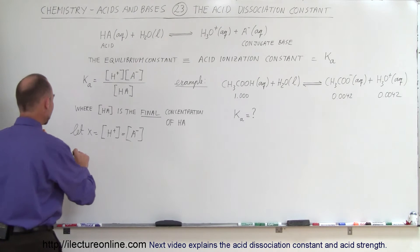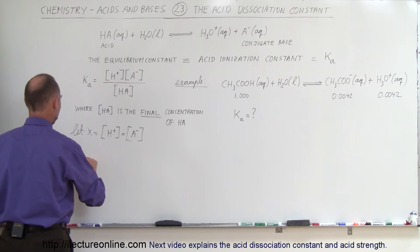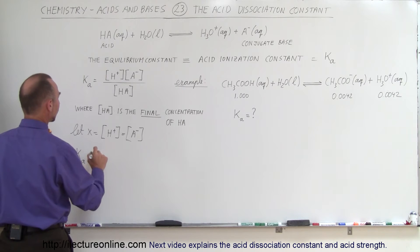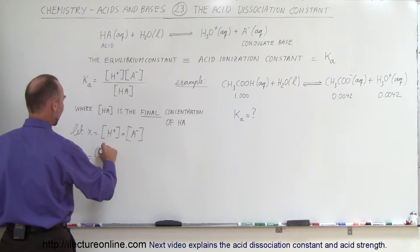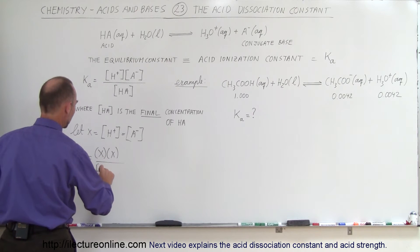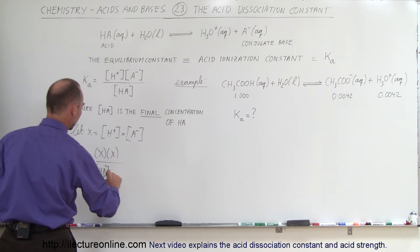we can then see that the constant, the acid dissociation constant, and we usually like to write a small a like that, is going to be equal to X times X divided by the original concentration, that would be HA original,